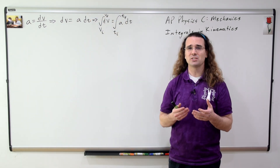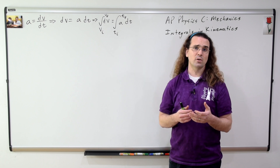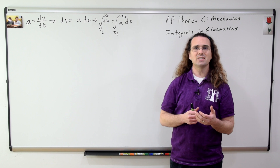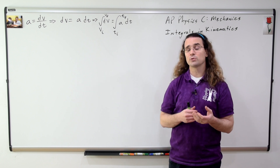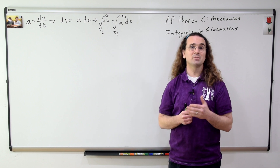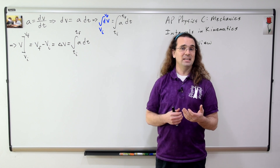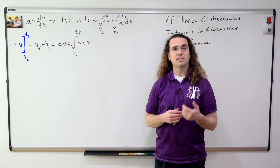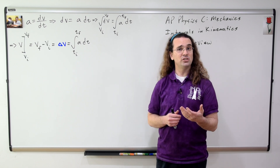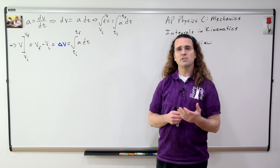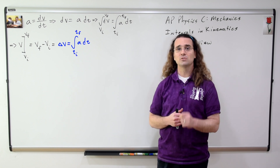A definite integral just means the limits are defined. For example, on the left-hand side, when we take the integral with respect to velocity, the limits are from velocity initial to velocity final. And on the right-hand side, when we take the integral with respect to time, the limits are from time initial to time final. The integral of dv is just velocity from velocity initial to velocity final, which equals velocity final minus velocity initial, which equals the change in velocity. In other words, change in velocity equals the definite integral of acceleration with respect to time.